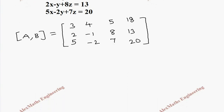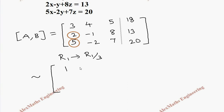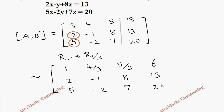Now we have to convert this to a diagonal matrix. For that we have to make these two elements zero. Before that, I need a 1 in the first pivot position, so R1 is entirely divided by 3. Our augmented matrix will become 1, 4/3, 5/3, 6. The rest of the elements are written as they are.